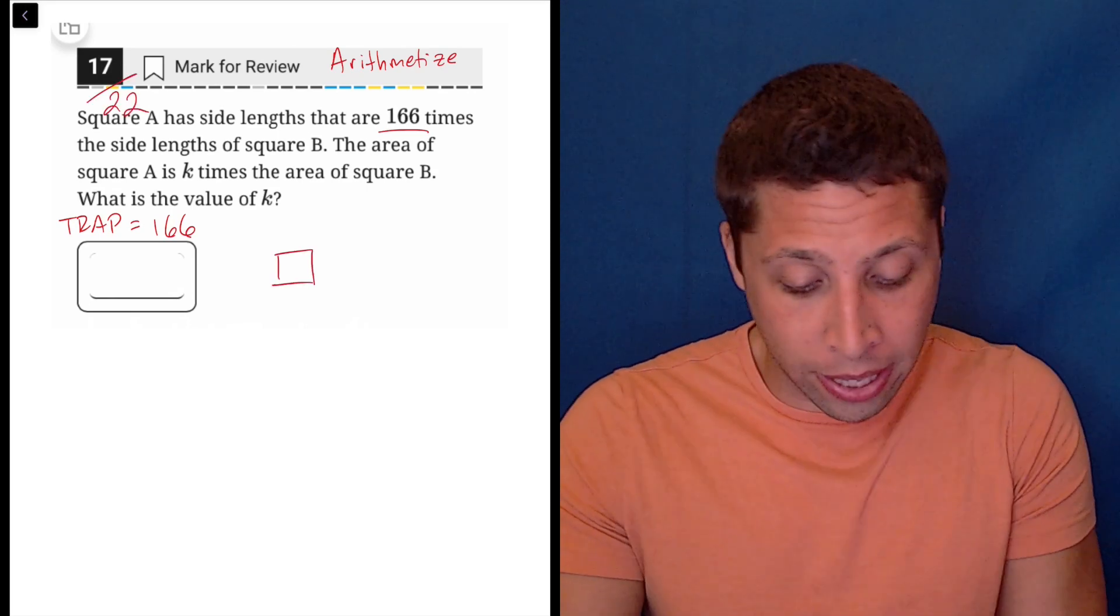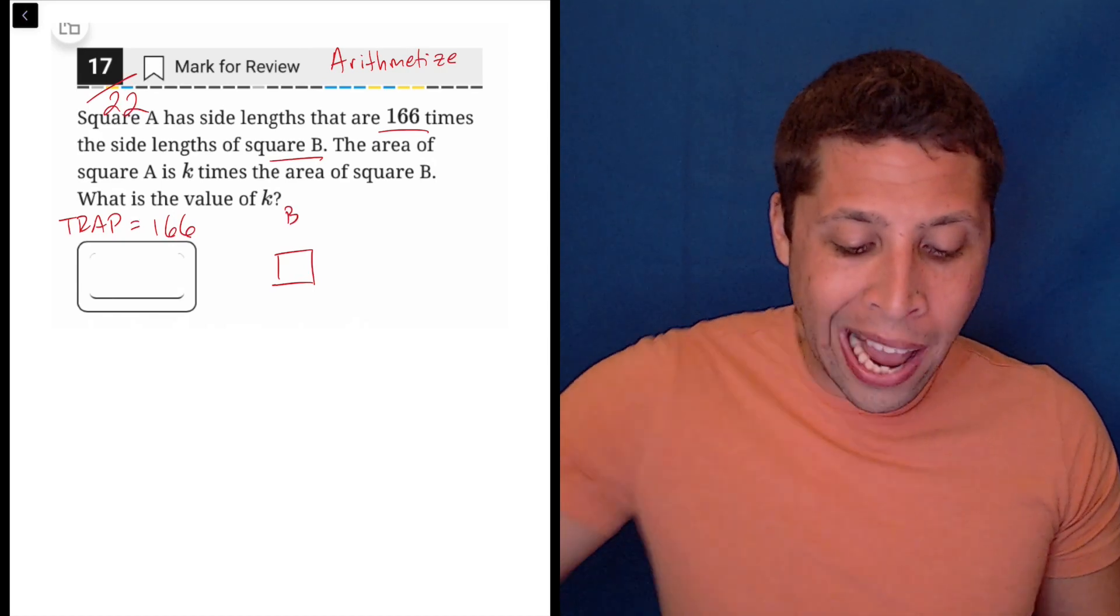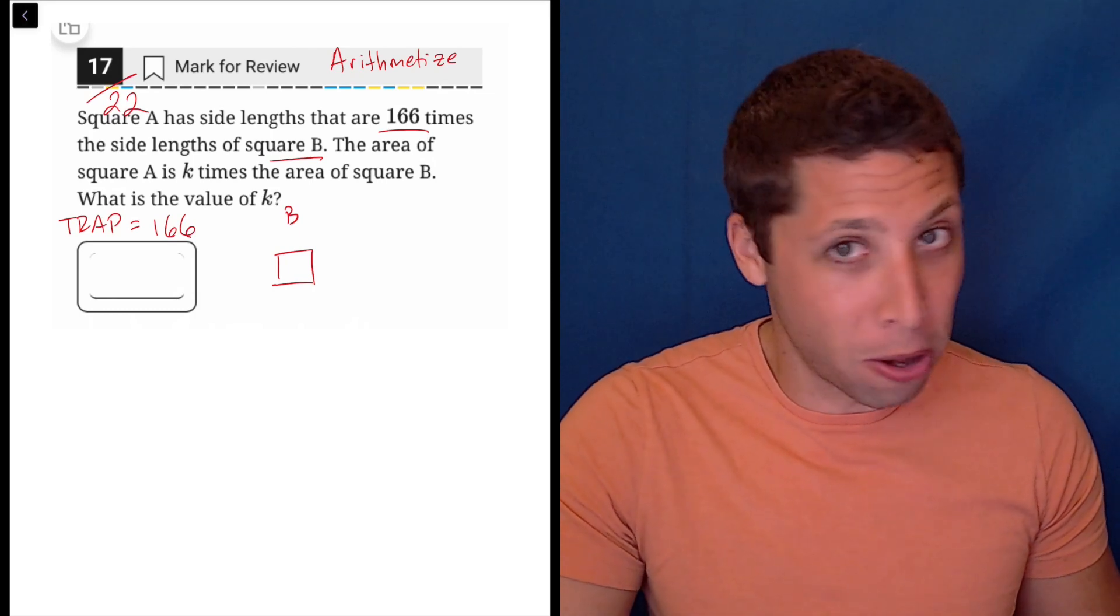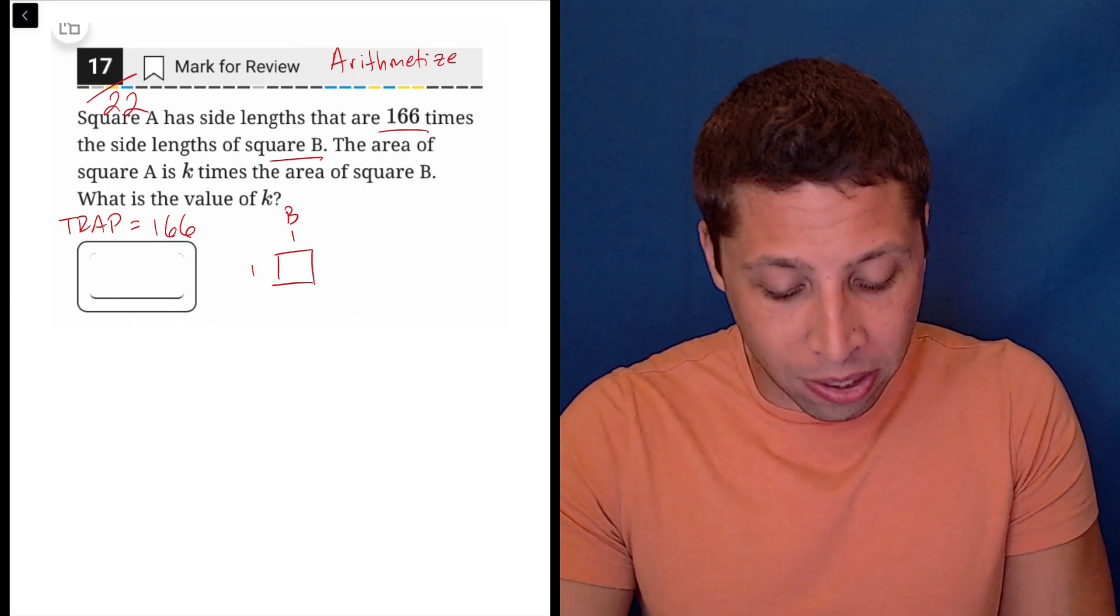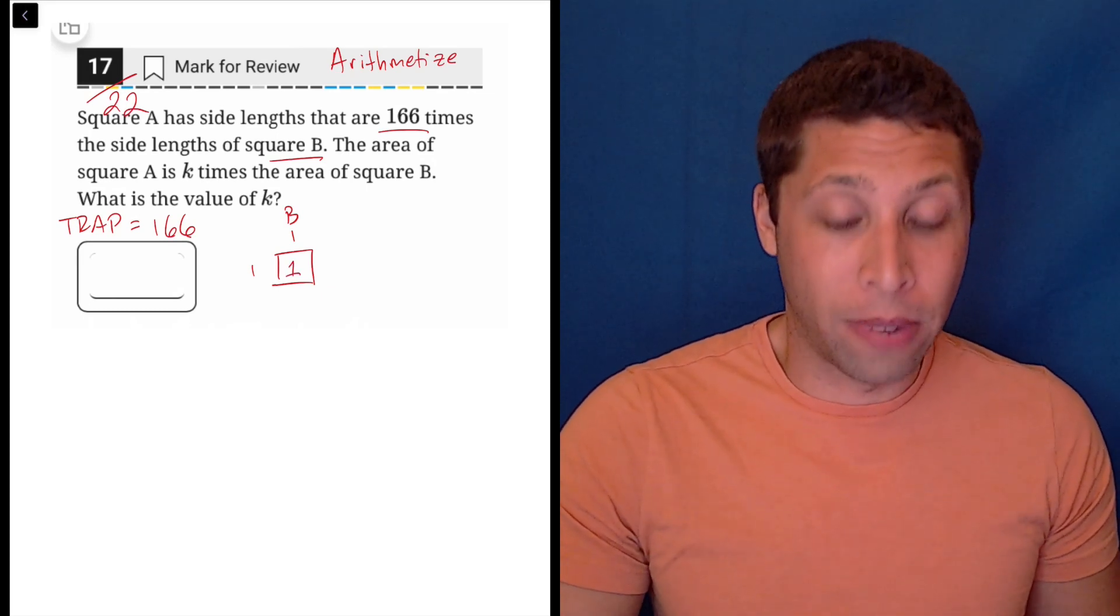We have square B, right? That's kind of our starting point. So if we need square A to have lengths that are 166 times that, that's a big difference. So why don't we make B as small as possible? Why don't we just make it a 1 by 1 square? And what's the area of a 1 by 1 square? Well, length times width is 1 times 1 is 1. So that's really easy.